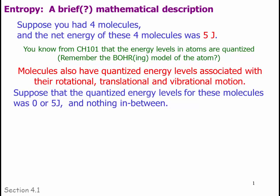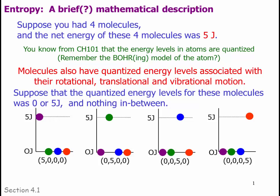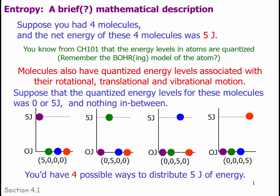Suppose that the quantized energy levels for these molecules were either 0 or 5 joules and nothing in between. For 4 molecules to add up to 5 joules, we can have a combination where one of the molecules is at 5 joules and the other 3 are at 0, or a different molecule is at 5 joules. So you have 4 possible ways to distribute 5 joules of energy in this system.